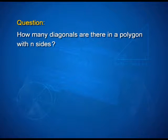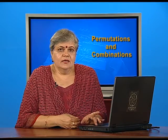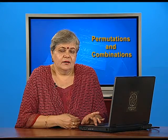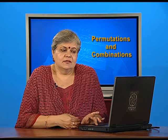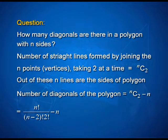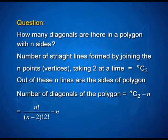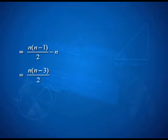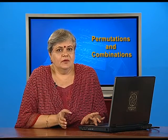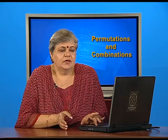The same understanding can be used for a problem: how many diagonals are there in a polygon with n sides? Diagonals are segments drawn by joining 2 vertices, so taking all n points 2 at a time gives nC2 line segments. However, this count includes the n sides of the polygon, which are not diagonals. So the number of diagonals is nC2 minus n. Simplifying gives the result n(n − 3) / 2, which can be used to find the number of diagonals in any polygon with n sides.